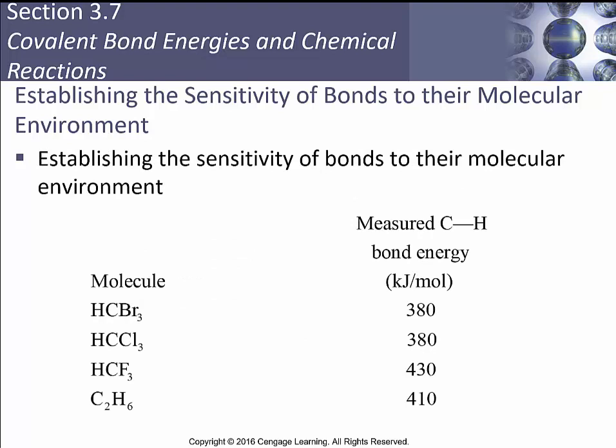Another example: the measured carbon-to-hydrogen bond energy varies depending on whether you have a bromine, chlorine, or fluorine on the molecule. Bromine pulls electrons toward itself differently than fluorine. Fluorine is very electronegative, so a lot of electron density is centered around the fluorine, making the carbon more electropositive. That makes it more energetically favorable to attach hydrogen there compared to the bromine case. The takeaway is that the local environment can shift bond energy a little bit.